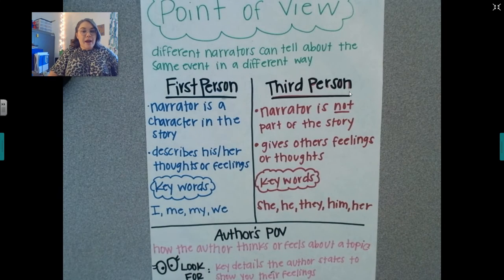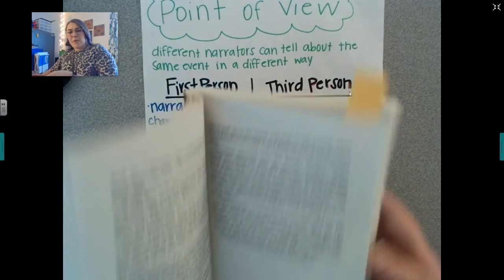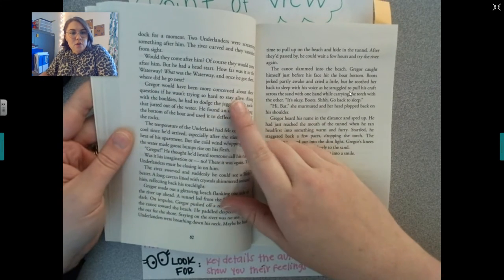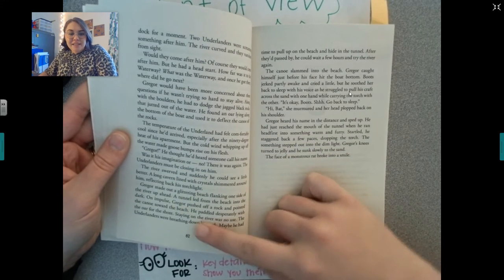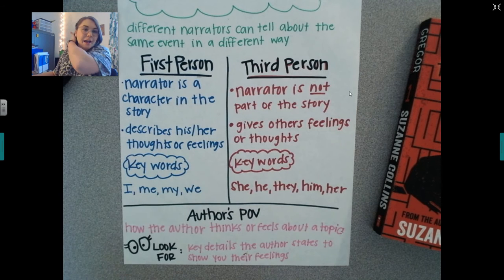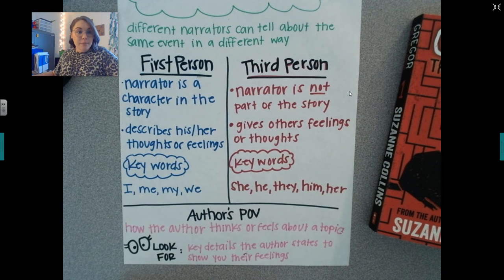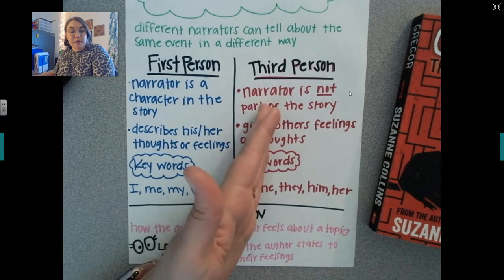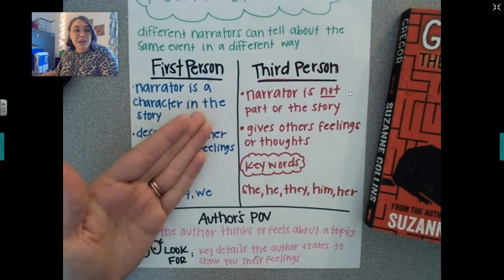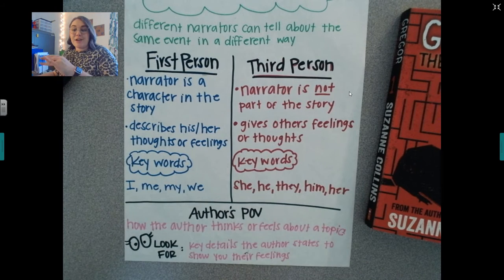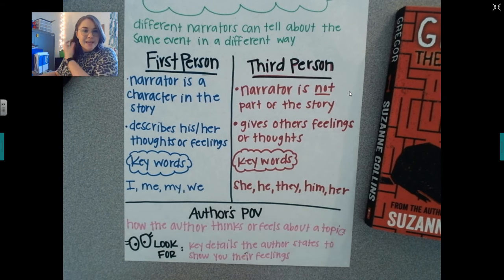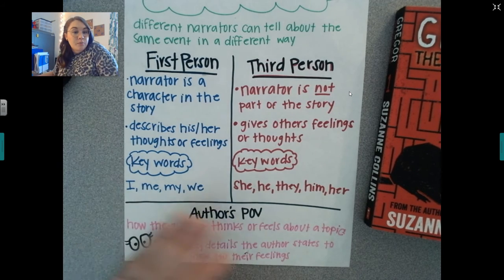So I want you to think about Gregor the Overlander and what we have read so far. What point of view is Gregor the Overlander told from? I see a lot of his name — 'Gregor would have been more concerned.' I don't see a lot of 'I.' It says he, she, they — that gives us maybe third person. But I'm going to read chapter 8 today, and your job while I'm reading is to figure out: is it first person or third person? And who is the narrator? If it's first person, the narrator would be Gregor. If it's third person, the narrator is somebody outside the story. Take an educated guess.